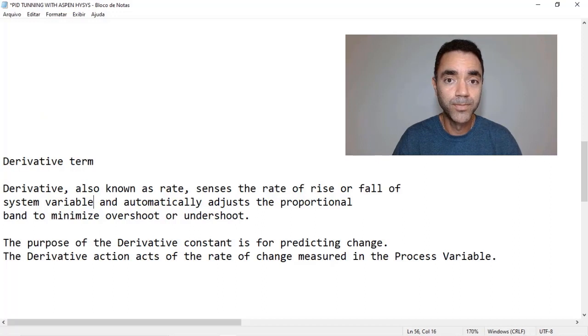And the main purpose of the derivative term is to predict what can happen in your variable. So it's most useful when you have a dead lag, that is when you do a change and you have a long time to have a response in your system.